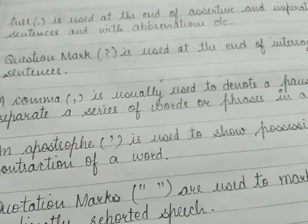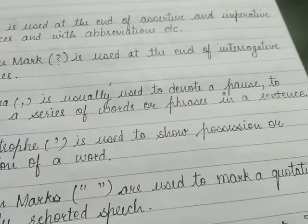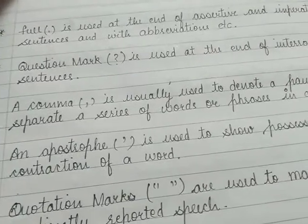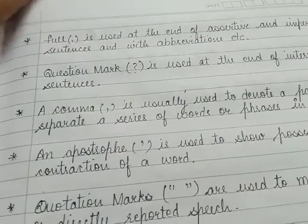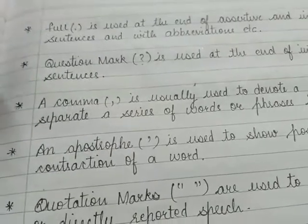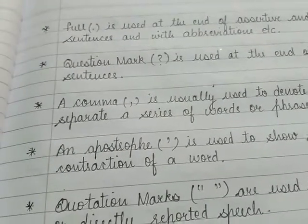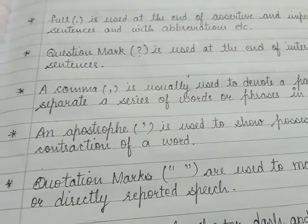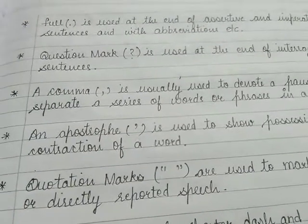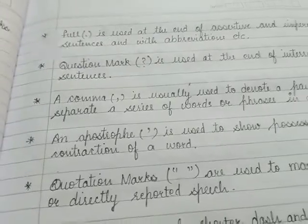A comma is usually used to denote a pause to separate a series of words और phrases in a sentence. इसलिए किया जाता है, ताकि sentence में pause मिले और ये पता चले कि ये word और phrase जो है sentence में वो इस series से अलग है.